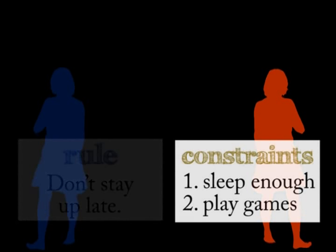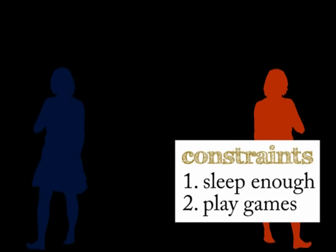The second friend has a list of constraints. She ranks the constraints by priority, sleep above games.